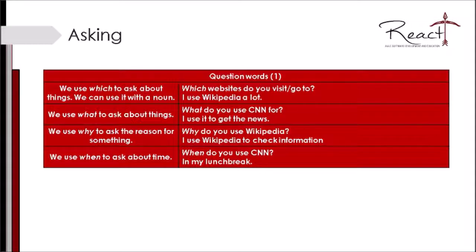We use 'what' to ask about things. Nós usamos o 'what' para perguntar sobre coisas. What do you use CNN for? I use it to get the news. O que você usa no CNN? Eu uso para conseguir informações, notícias. We use 'why' to ask the reason for something. Nós usamos o 'why' para perguntar a razão de alguma coisa. Why do you use Wikipedia? I use Wikipedia to check information. Por que você usa a Wikipedia? Eu uso a Wikipedia para checar informação.